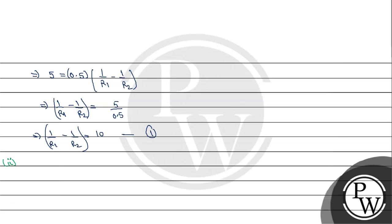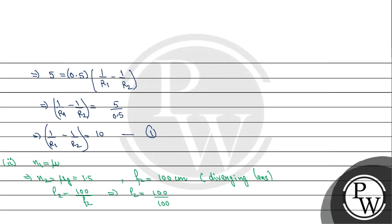Now we place the lens in the liquid medium with refractive index μ. So n1 = μ, and n2 = μg = 1.5. The focal length given for this case is 100 cm, and since it is a diverging lens, f2 = -100 cm. The power P2 = 100/f2 = 100/(-100) = -1 diopter.